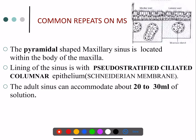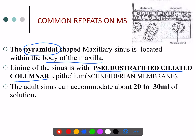Regarding histology: the maxillary sinus is a pyramidal body within the maxilla. The lining of the maxillary sinus is a most commonly asked question — it is pseudostratified ciliated columnar epithelium. You can see cilia, and the nuclei are at different levels, so it looks stratified but is actually a single layer, hence called pseudostratified ciliated columnar epithelium.